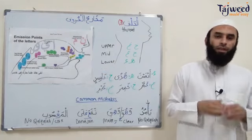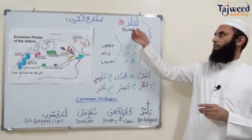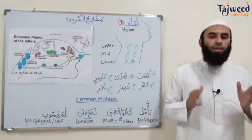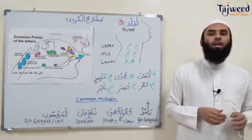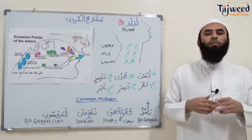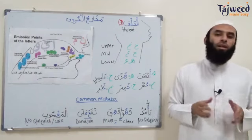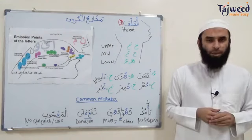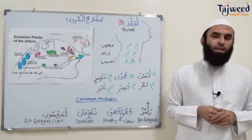Today inshallah we're going to look at the fourth part, the fourth area that the letters can come out from. We're going to look at al-halq — we'll find out what al-halq is, how many letters, how many makhraj points, how to clearly pronounce these letters, and also at the end we're going to look at the common mistakes that people make so we can avoid these mistakes.